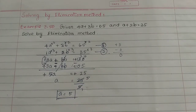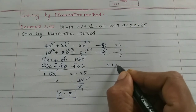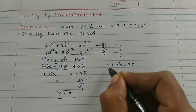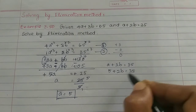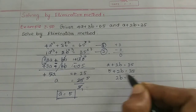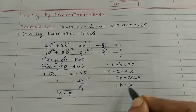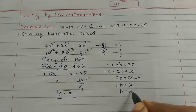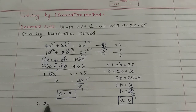Now, to find b, substitute the value of a into any equation. Using the second equation: a plus 2b equals 35. Substituting a equals 5: 5 plus 2b equals 35. So 2b equals 35 minus 5, which is 30. Therefore b equals 30 divided by 2, which is 15. So b equals 15.